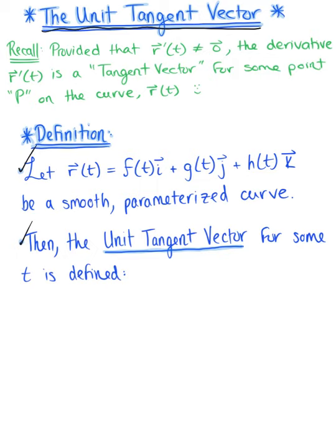Then, the unit tangent vector for some arbitrary parameter t is defined as follows. We define this unit tangent vector as capital T of our parameter little t.